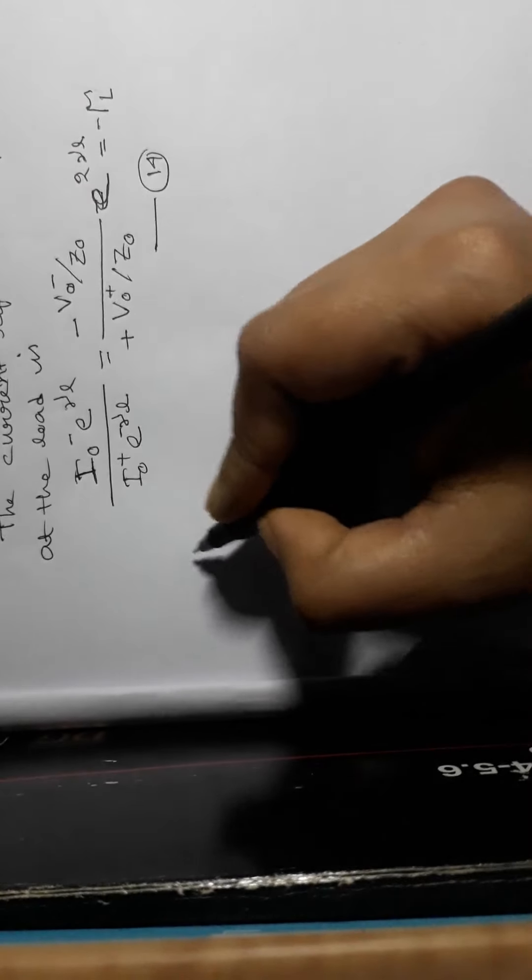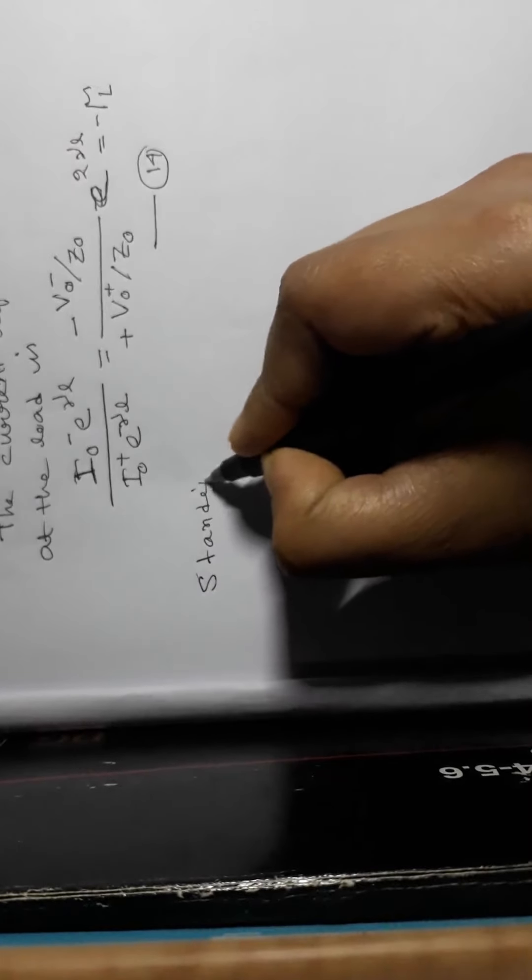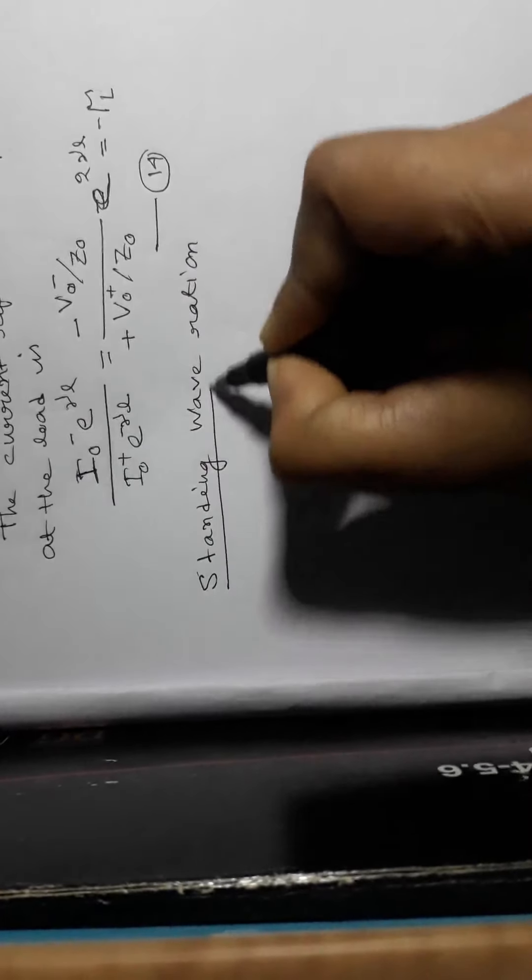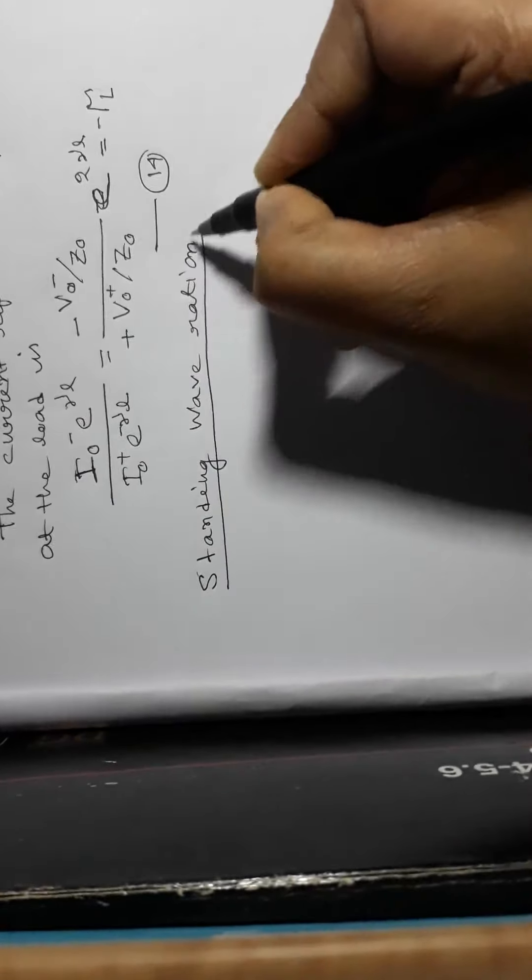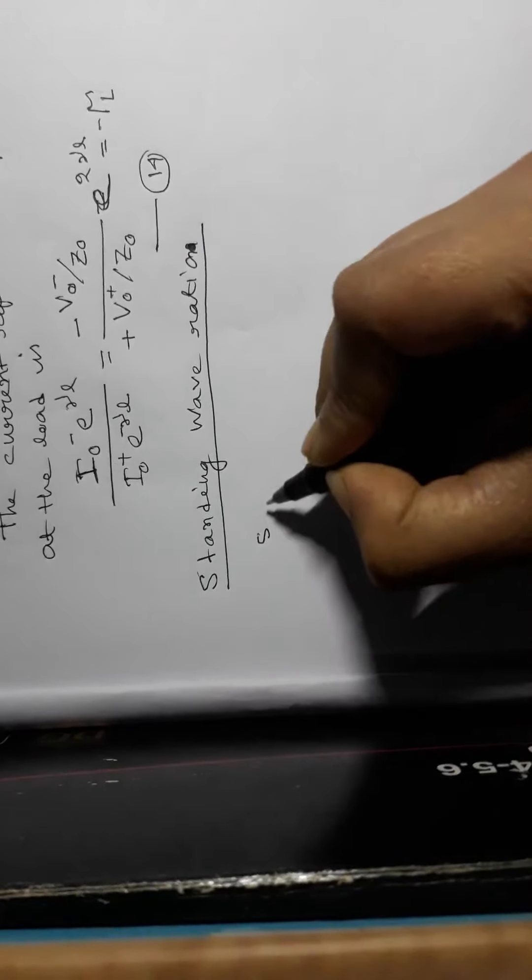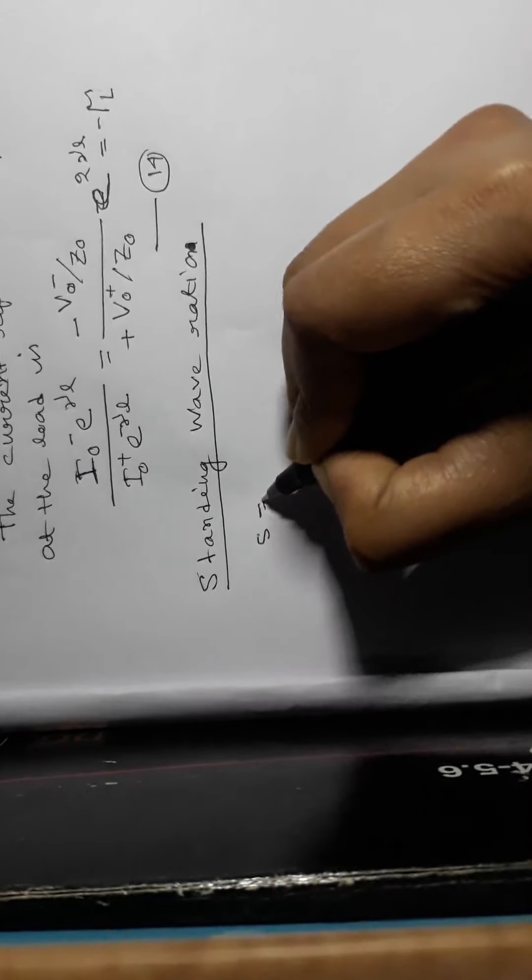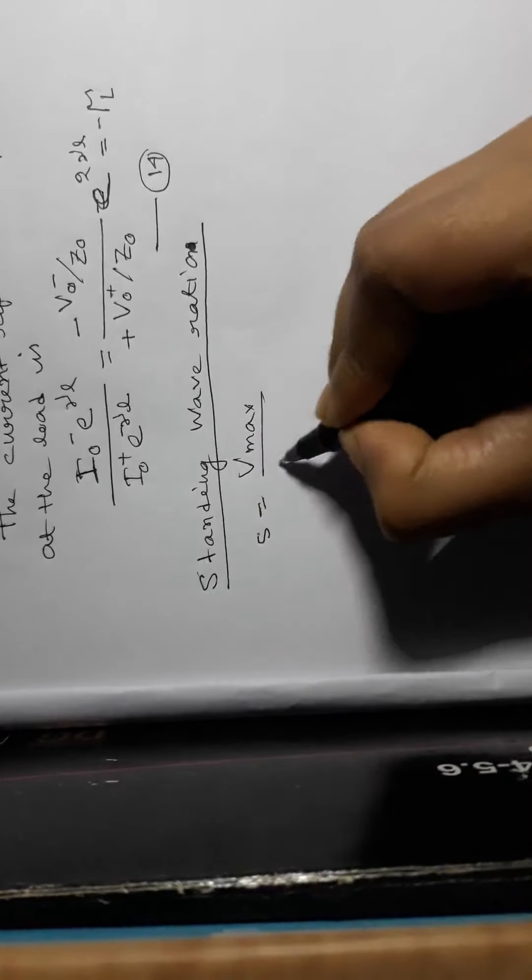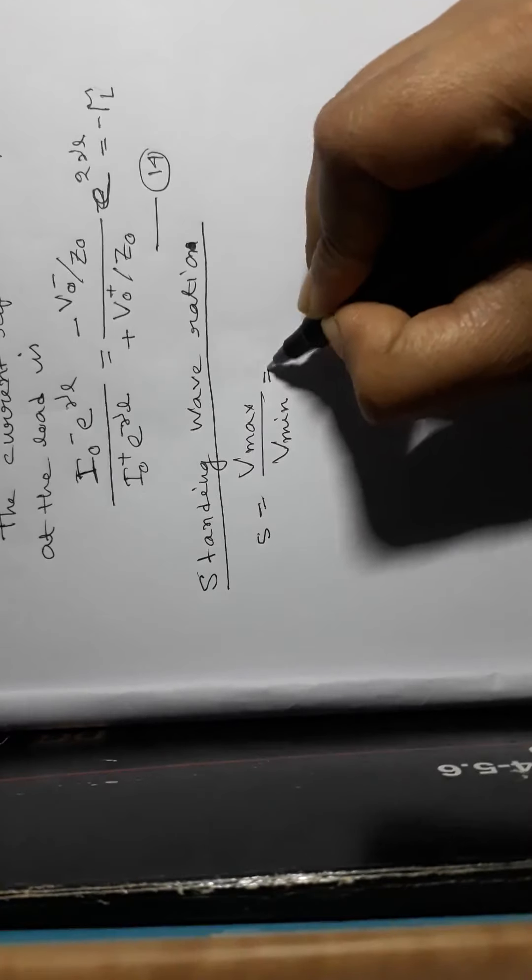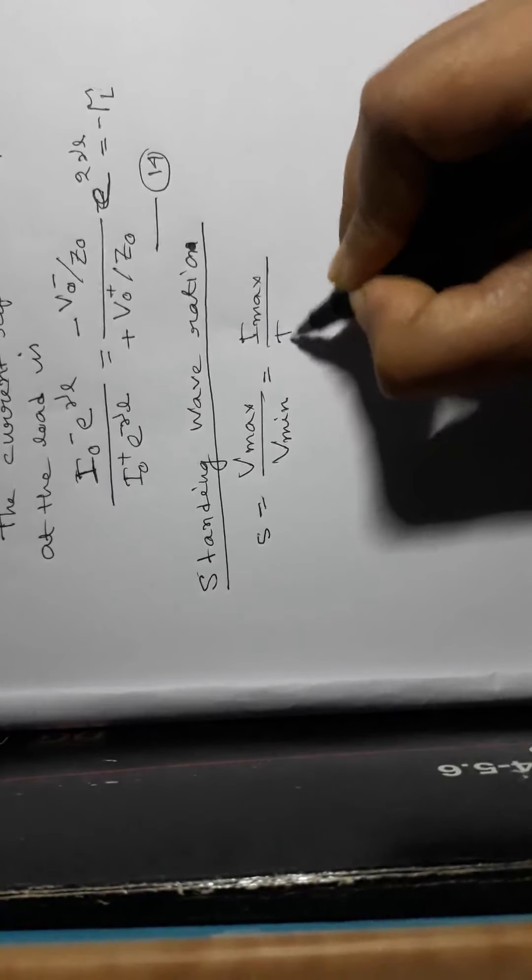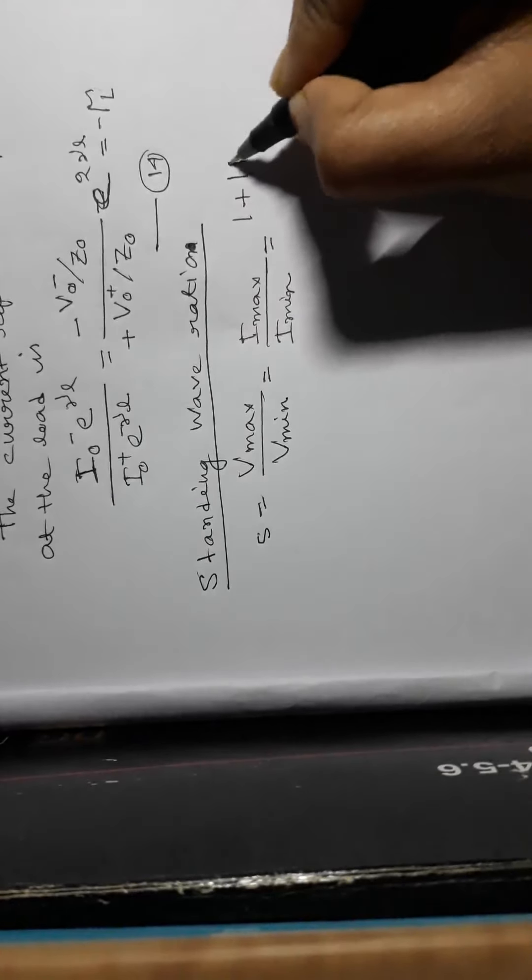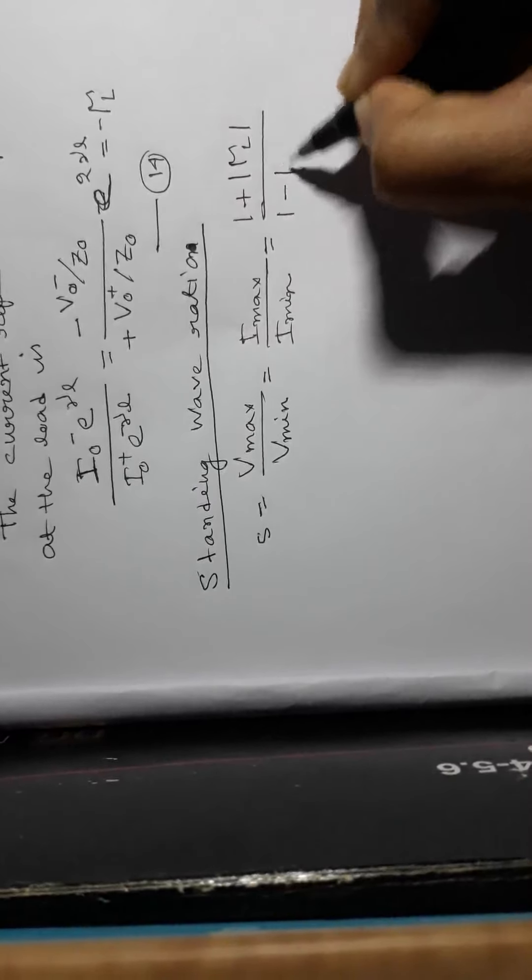Next, what is standing wave ratio? By a small S, that is S equal to V max by V min, or I max by I min, that is equal to 1 plus capital gamma L by 1 minus capital gamma L.